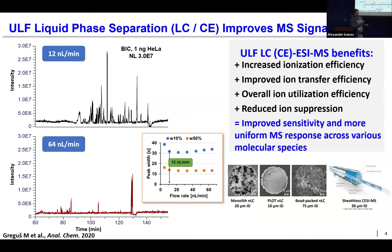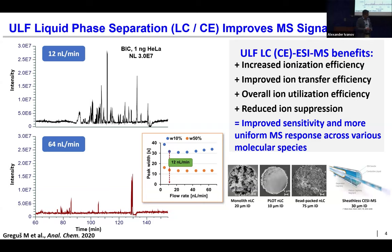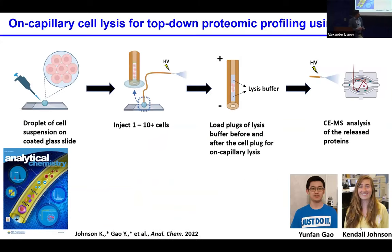This is a simple example of what happens if you decrease the flow rate from about 60 nanoliters per minute to 20 nanoliters per minute for the same sample: signal-to-noise goes up, ionization suppression goes down, ion utilization and ionization efficiency increase. In my lab, we use different modalities of separations — conventional LC packed with beads, open tubular columns, and monolithic columns polymerized in the lab.